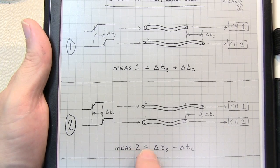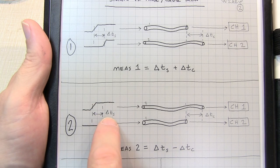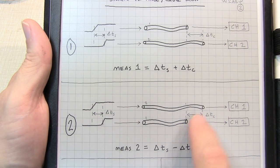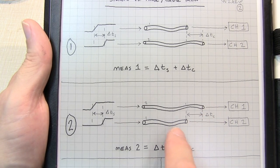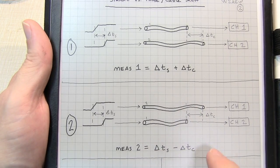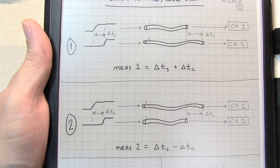And this measurement then, if we work out the math, is going to be our original signal delay, but now the cable delay changes sign because the second signal is arriving earlier or the first signal is arriving later, just the opposite of the above case.